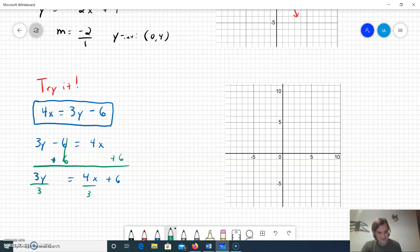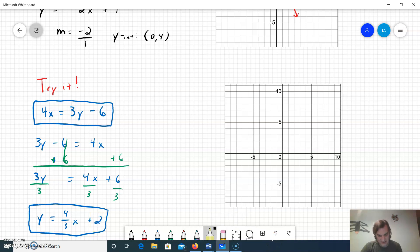Now I have 3y equals 4x plus 6, and next I'm going to get the y completely by itself by dividing by the 3, which causes me to divide everything by the 3. So now I have y equals four thirds x plus 2. This is your slope-intercept form equation of the line, and you do not expect to always have a nice whole number for the slope.